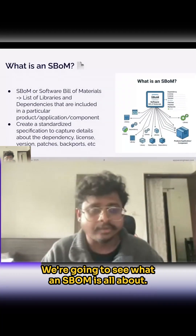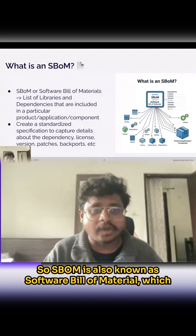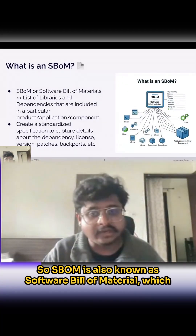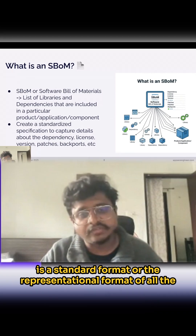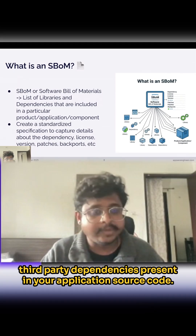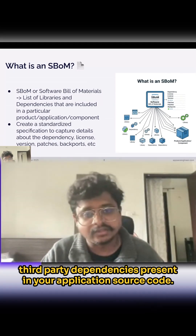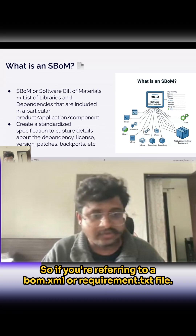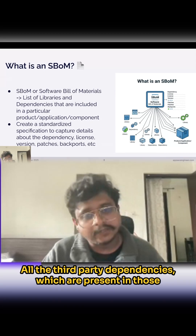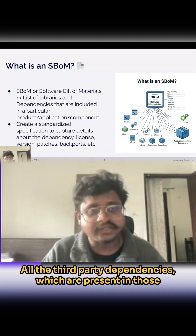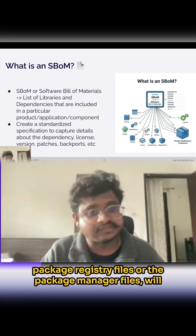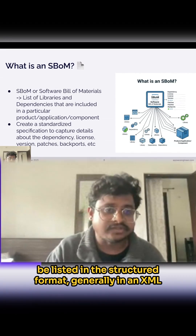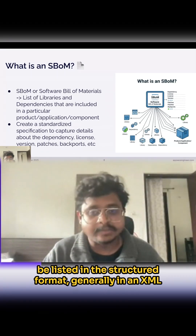SBOM, also known as Software Bill of Material, is a standard representational format of all the third-party dependencies present in your application source code. If you are referring to a pom.xml or requirements.txt file, all the third-party dependencies present in those package manager files will be listed in a structured format, generally in an XML format, known as SBOM.